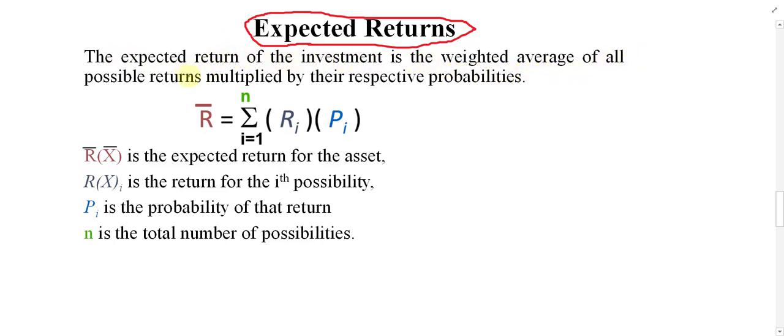Expected return of an investment is the weighted average of all possible returns multiplied by their respective probabilities. In other words, the expected return equals the total of all returns multiplied by their probabilities — if you multiply all returns by their probabilities and take the sum, you can find the expected return. Let me go to the formula and then take a simple example to explain the definition.